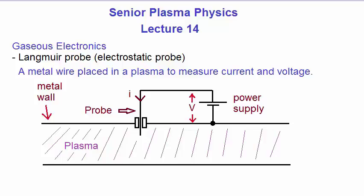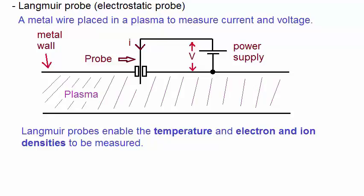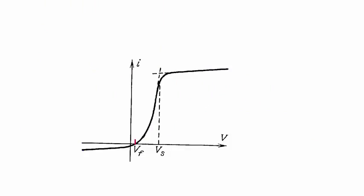Amongst other things, the Langmuir Probe enables the plasma temperature and electron and ion densities to be measured. Here is a plot of the applied voltage from the power supply and the measured current flowing through the probe.